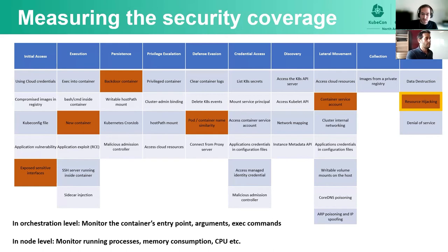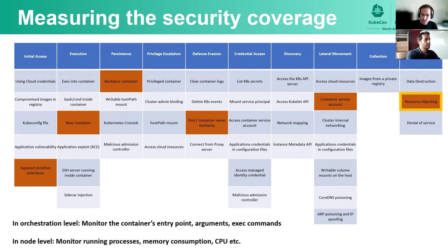For resource hijacking, we can monitor it from two levels. At the orchestration level, we can monitor container images, entry points, arguments, and also exec commands. At the node level, we can monitor running processes, memory consumption, CPU consumption, etc. So this was an example of how we can use the threat matrix to measure our coverage against a real-world attack.